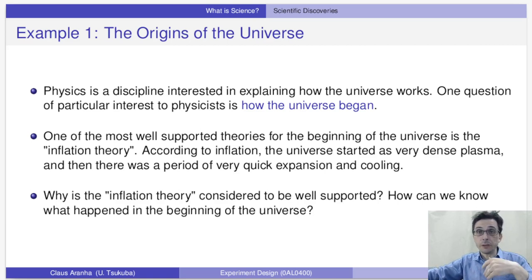Physicists look at the light of galaxies far away, which give us information about the start of the universe, and they use this information to build theories about how the universe began. One of the most well-supported theories is the inflation theory, which says that in the beginning, the universe was composed of very dense, hot matter. Then, in the first instance of the universe, space expanded very quickly.